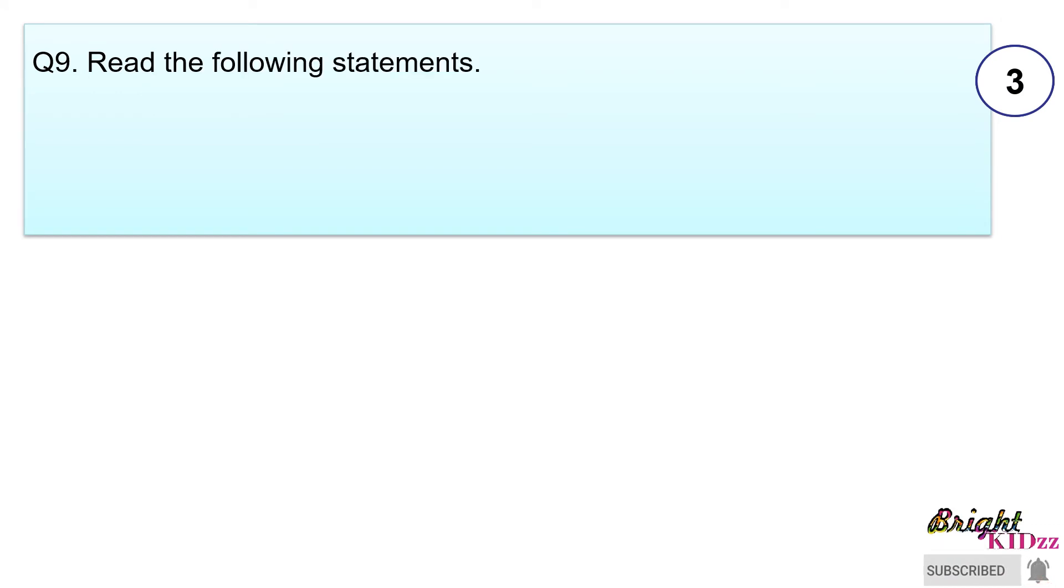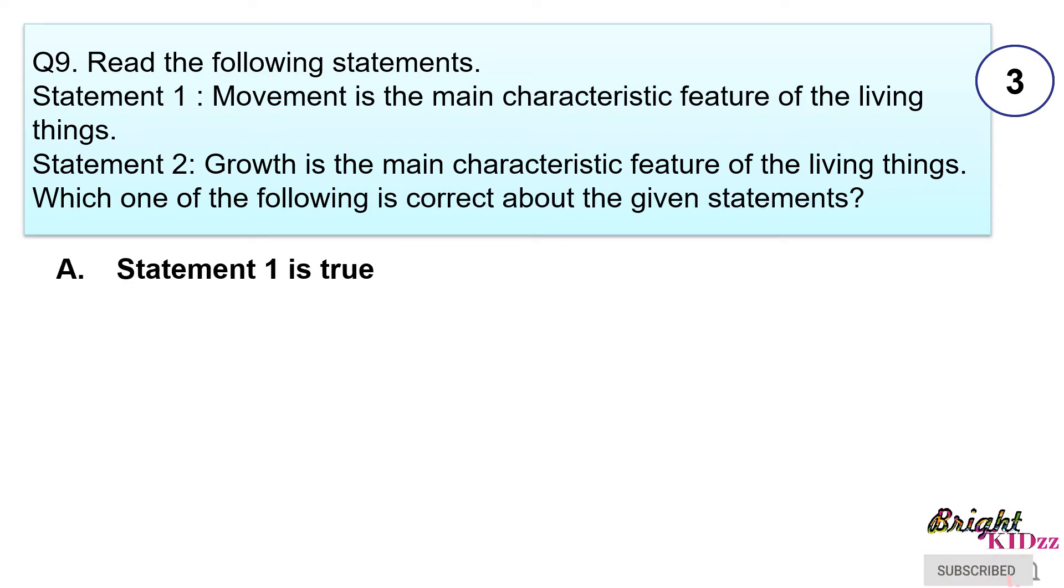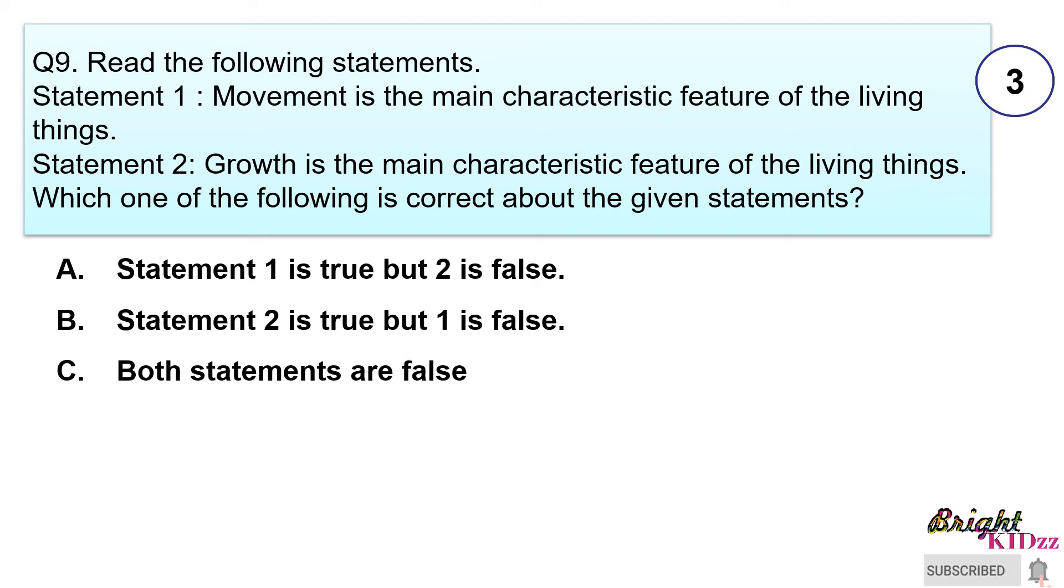Read the following statements. Statement 1: Movement is the main characteristic feature of the living things. Statement 2: Growth is the main characteristic feature of the living things. Which of the following statements is correct? Statement 1 is true but 2 is false. Statement 2 is true but 1 is false. Both statements are false. Both statements are true.